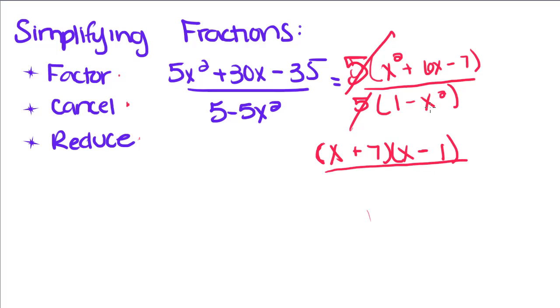And then we're going to factor that over. Since this is a difference of squares, it's just the square root of the first term minus the square root of the second term, times the square root of the first plus the square root of the second. Now these two factors will cancel, and we'll be left with a fraction of x plus 7 over x plus 1.